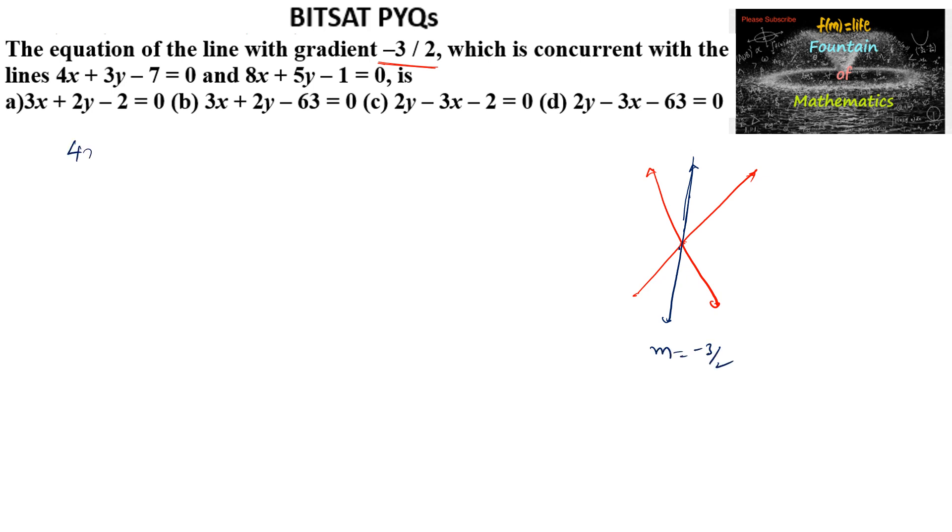Let's solve the two equations. 4x plus 3y minus 7 is equal to 0 and 8x plus 5y minus 1 is equal to 0. And we can write 3 minus 7 and 4 and 3 and 5 minus 1, 8 and 5. By doing cross multiplication,